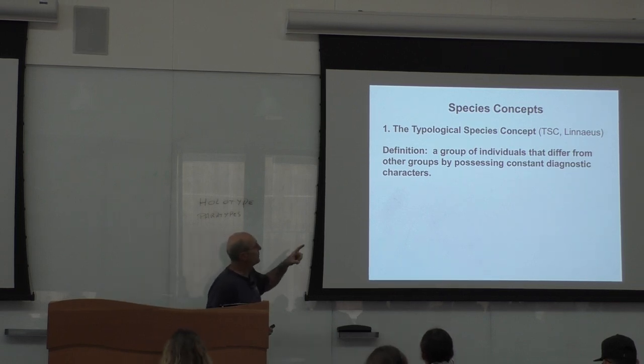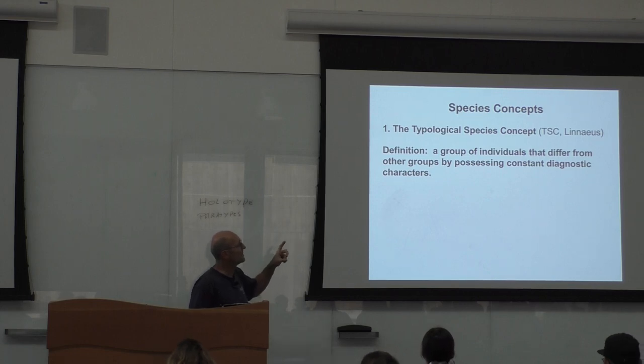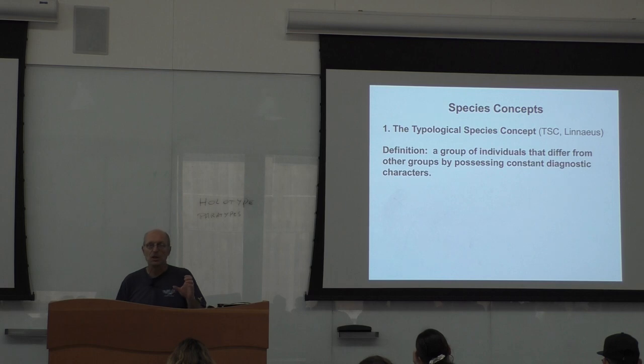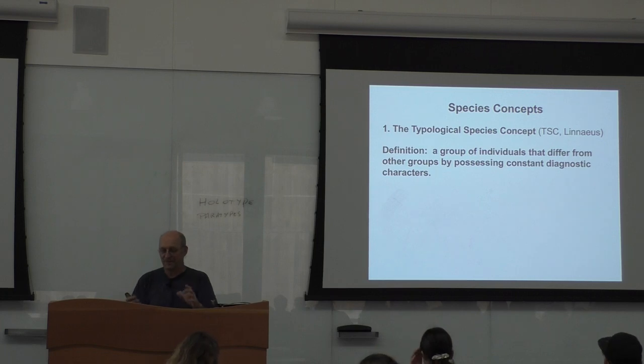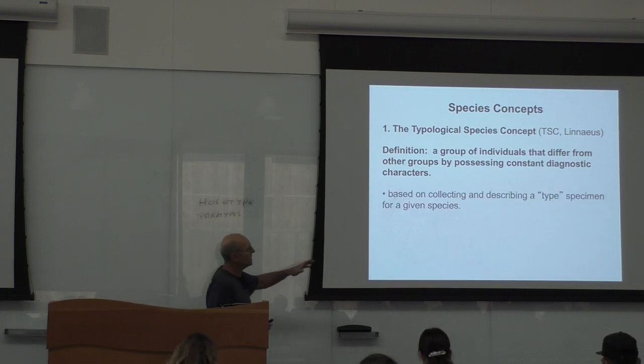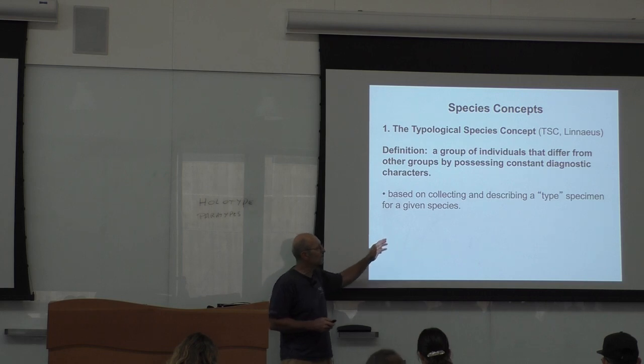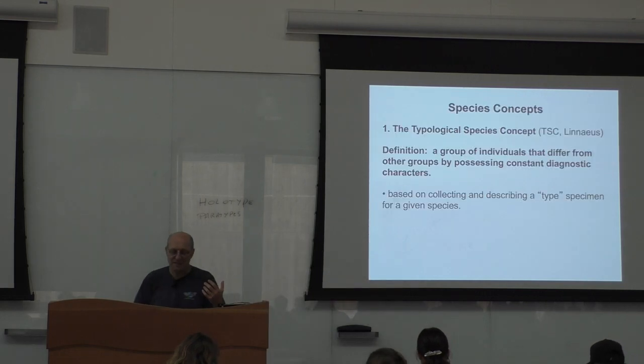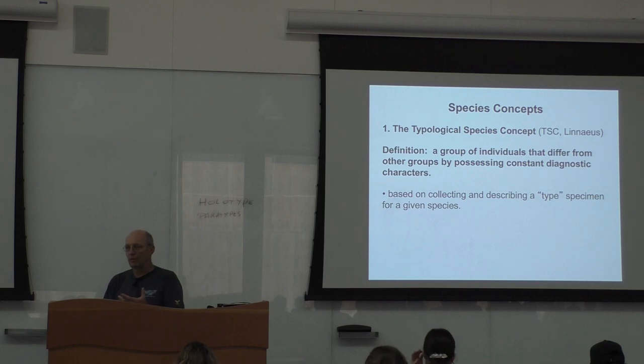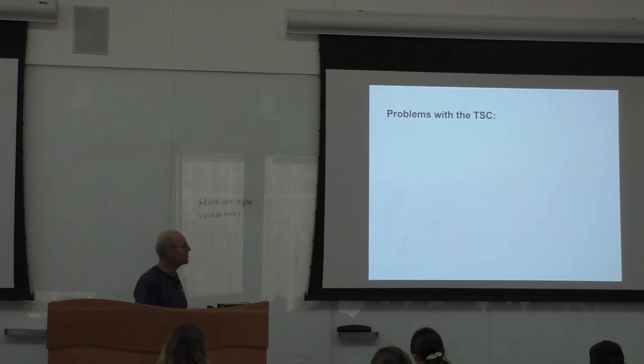A group of individuals that differ from other groups by possessing constant diagnostic characters. That's actually the original definition of Linnaeus. He considers that they are different than the others. That's it. Now, it's based on collecting and describing a type specimen for a given species. That's what I'm talking about, a type specimen. Now, I'm going to talk about three major species concepts. I'm going to describe them first. And I also will describe what the caveats or the pitfalls of the methods are. All the concepts have pitfalls. Otherwise, I would just present one and say, this is what it is. All of them have.